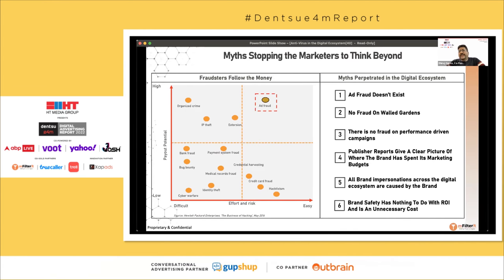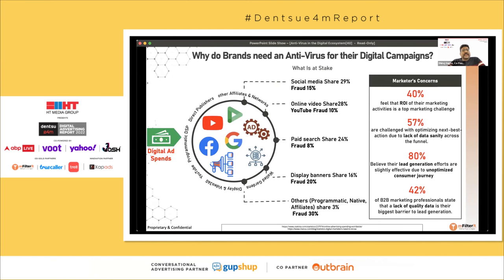Some myths I want to cover quickly: if you think you have trusted sources or walled gardens and feel comfortable there, unfortunately that's a myth — there is fraud on walled gardens, and the same bots that impact other publishers impact those too. Another myth is 'I'm optimizing towards performance and sales, how can that be wrong?' There is fraud on performance campaigns. Even if you're optimizing towards sales, you're not without fraud — in fact, there's a high chance you have more fraud in performance campaigns.